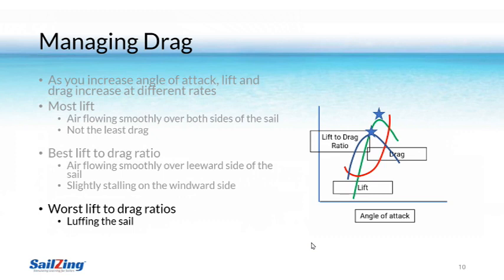Now let's look at the worst lift-to-drag ratios. The first is where you're luffing the sail — the drag is fairly low, but the lift is much lower, almost non-existent. Unless you're really overpowered, letting the sail luff is slow, and you should sail to prevent luffing, which is more detrimental than stalling your windward telltales. The second low point is stalling the leeward side of the sail. This graph shows again that it's really important to avoid stalling. In stalling, you have decreased the lift and increased the drag at the same time. This is bad.